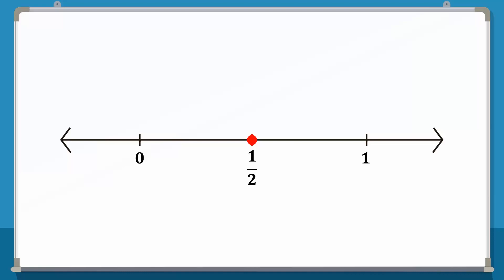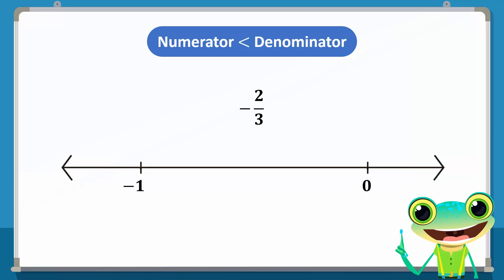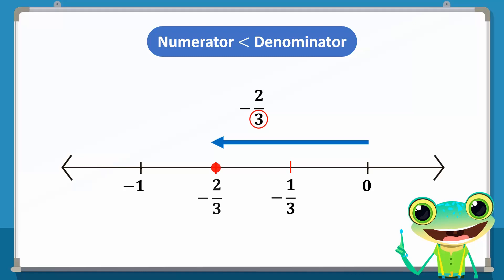Generally, on a number line, we divide the line segment according to the denominator. First, consider a case where the numerator is less than the denominator. The rational number minus 2 over 3 is negative and is less than 0, so it lies to the left of 0, between consecutive integers minus 1 and 0. The denominator is 3, so we divide the line segment between minus 1 and 0 into three equal parts. Since the number is negative, we determine its location by moving to the left. The first mark represents minus 1 over 3 and the second represents minus 2 over 3, as shown by the red circle.